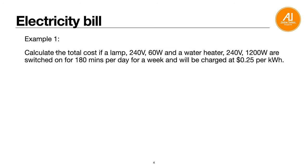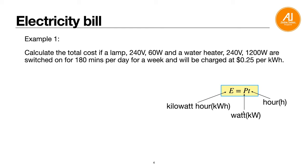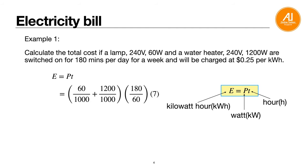Example one: calculate the total cost of a lamp (240V, 60W) and a water heater (240V, 1200W), switched on for 180 minutes per day for a week, where each unit costs $0.25 per kilowatt hour. Using E equals Pt, convert power to kilowatt: 60 divided by 1000 plus 1200 divided by 1000. Then multiply by time in hours: 180 minutes divided by 60, then multiplied by 7 for the full week.